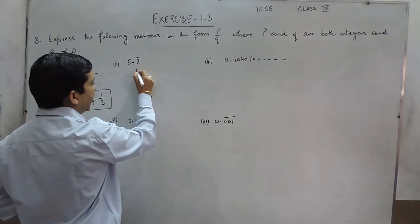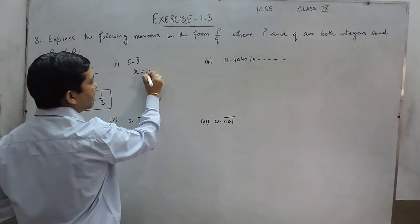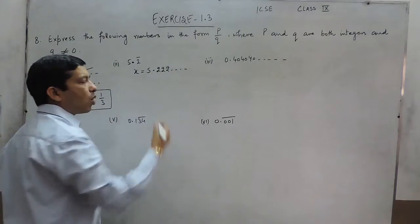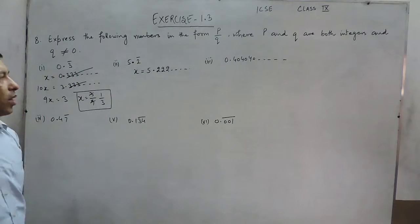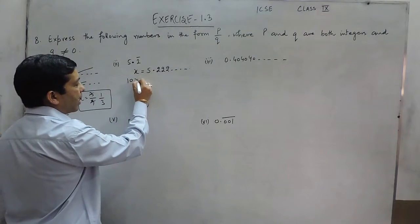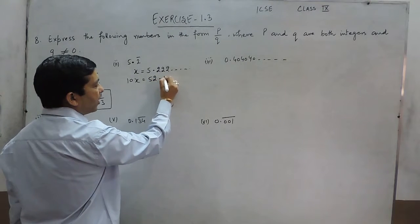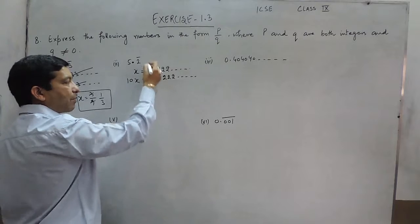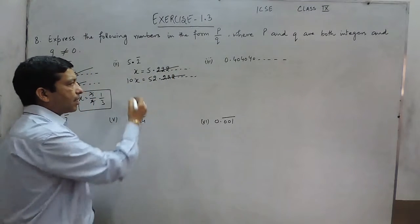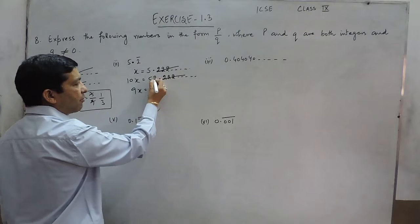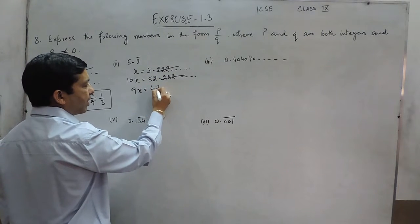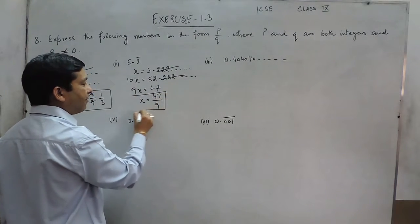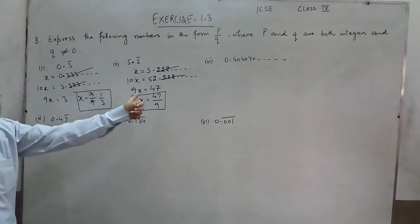In the second part it is 5.2 bar. So it can be written as x is equal to 5.222 and so on. After the decimal place again it is only a single digit, so we multiply by 10. It becomes 10x equals 52.222 and so on. When we subtract, the repeating 2s cancel out. So 9x becomes 52 minus 5, that is 47, and the value of x becomes 47 upon 9.